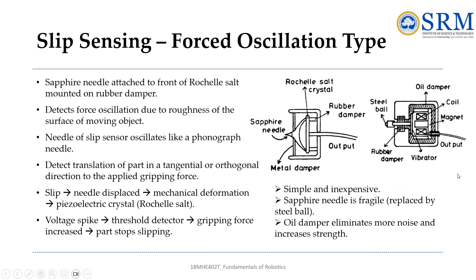The next type is the forced oscillation slip sensor. Imagine a sapphire needle attached to the front of the device — sensitive to touch like a phonograph needle on a record player — that can feel any roughness on the surface of an object it's holding. When the object starts to slide, the needle moves, causing a mechanical change in a special crystal called Rochelle salt. This change results in a sudden increase in voltage which acts like an alert signal, triggering a mechanism to increase the gripping force and stop the object from slipping.